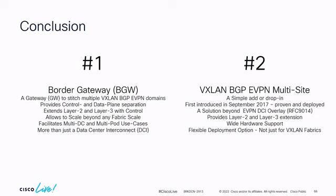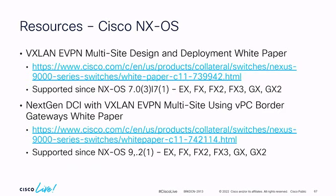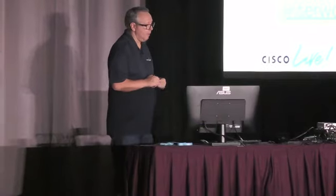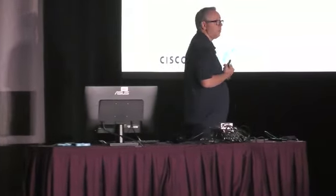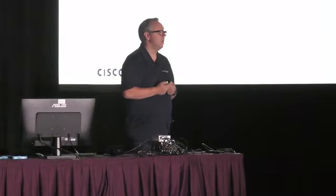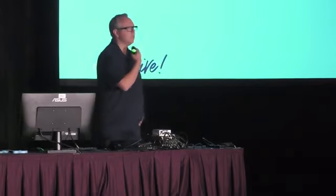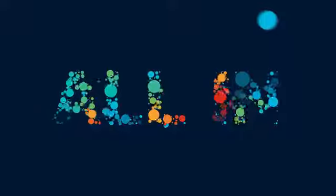Multi-site has been around since 2017 — about five years — focusing on layer 2 and layer 3 extension complementary to RFC 9014. Pretty much every Nexus 9000 hardware platform supports being a border gateway, with different scale numbers. From a deployment perspective, there's a white paper on next-gen DCI for replacing OTV and another for deploying anycast border gateways extensively. I'll post them into the WebEx room resources. Thanks for being here — please fill out the survey, and hope to see you tomorrow morning.